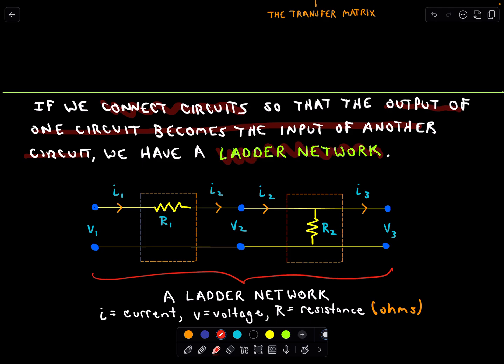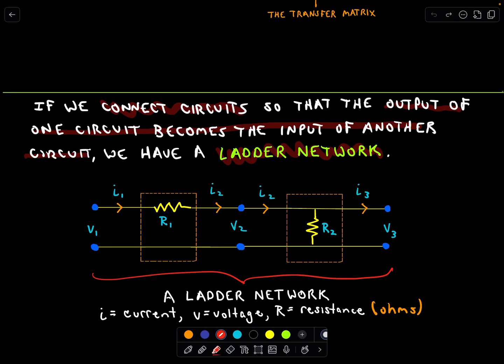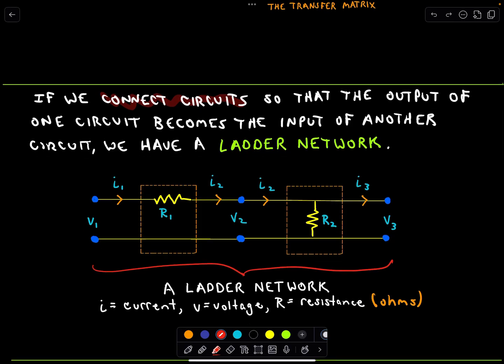So now the idea is let's start putting circuits in conjunction with one another. We're going to connect these circuits so that the output of one circuit becomes the input of another circuit. And when you do that, you have what's known as a ladder network. You could have many, many more circuits — things can get very complicated. And this, in fact, is a very important topic right now in artificial intelligence.